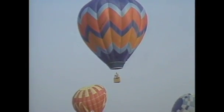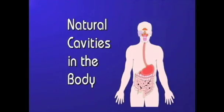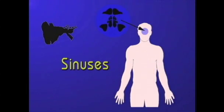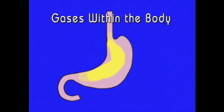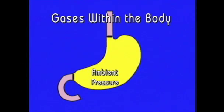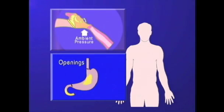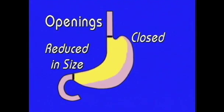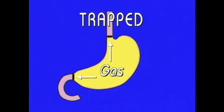With the invention of the hot air balloon that made it possible to have the first human flights, it became evident that exposure to altitude caused some physiological changes in the body. Some of these changes occur inside the natural cavities in the human body that contain varying amounts of gas, namely the middle ear, sinuses, stomach, and intestines. These body cavities each have openings that allow gases to enter or exit. Problems arise when these openings are reduced in size or closed — the gas is then considered trapped and can cause problems.